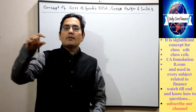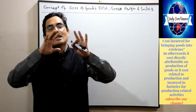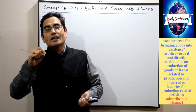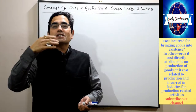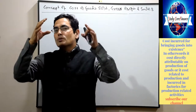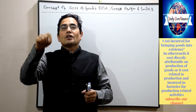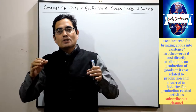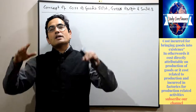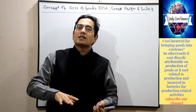First of all, let's understand what cost of goods sold is. The cost of goods sold is the total cost incurred for bringing goods into existence. It includes cost of material and it includes wages.